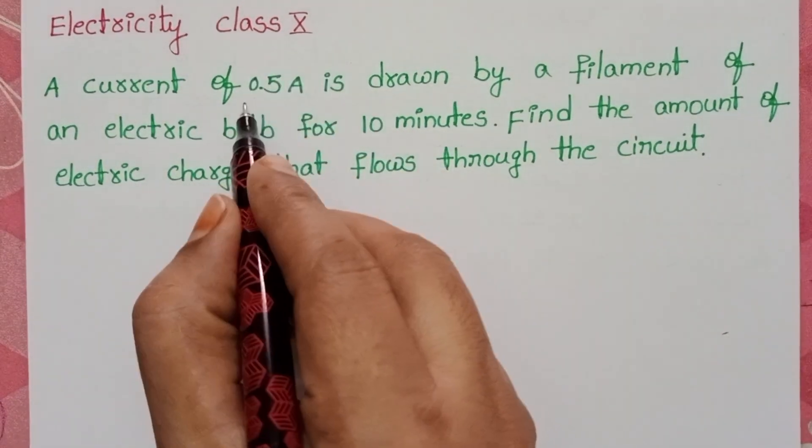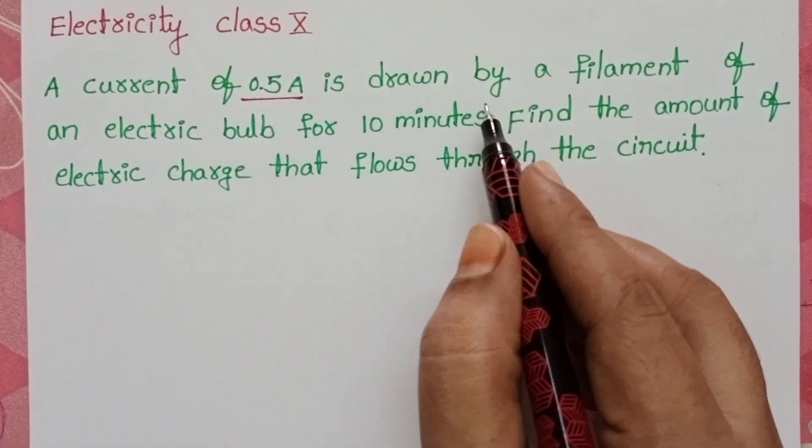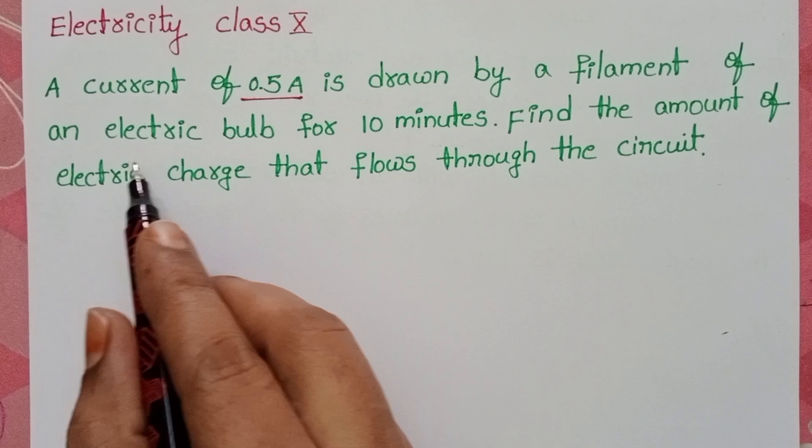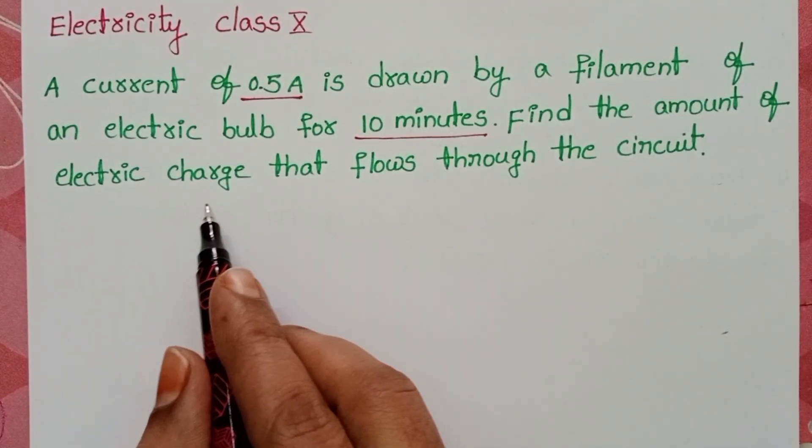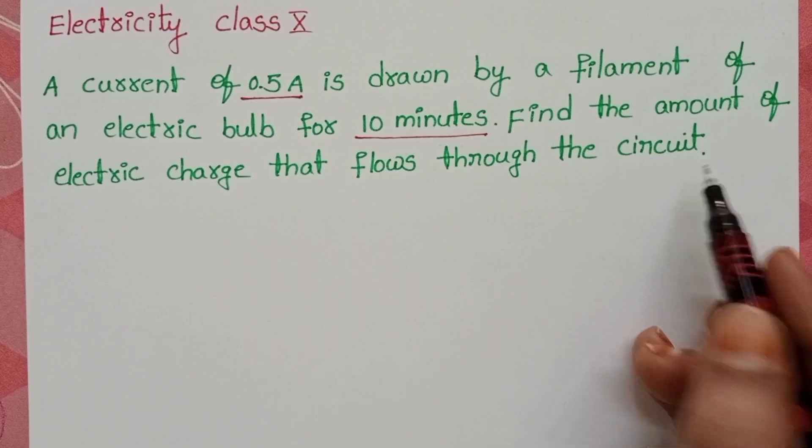A current of 0.5 amperes is drawn by a filament of an electric bulb for 10 minutes. Find the amount of electric charge that flows through the circuit.